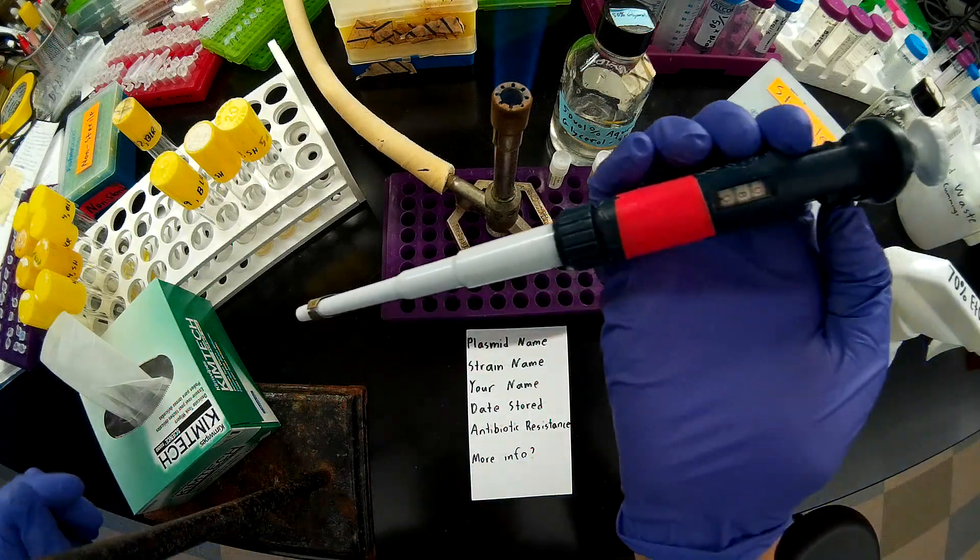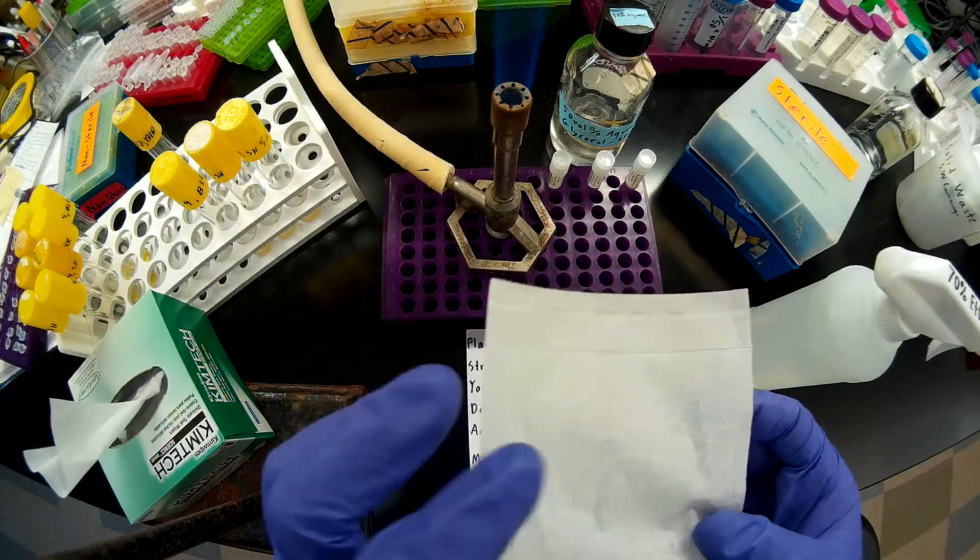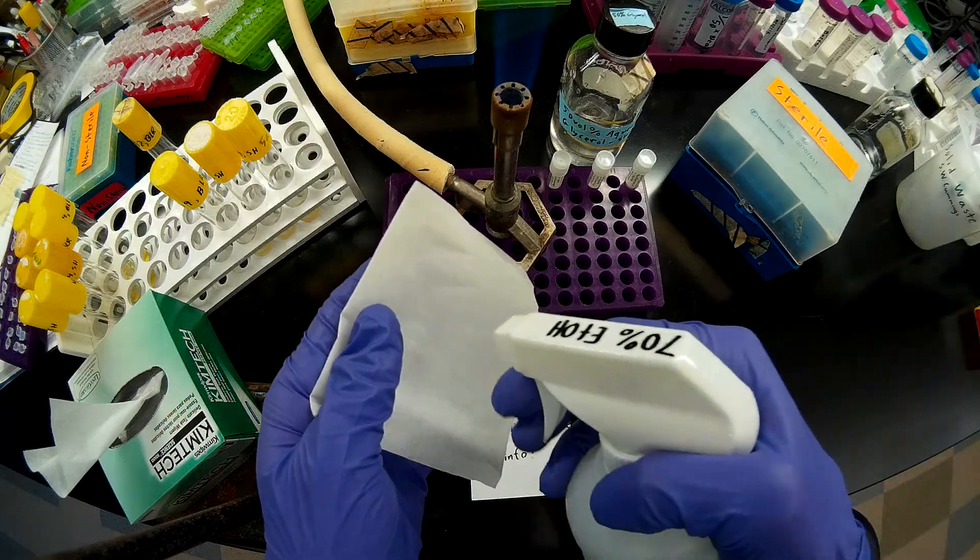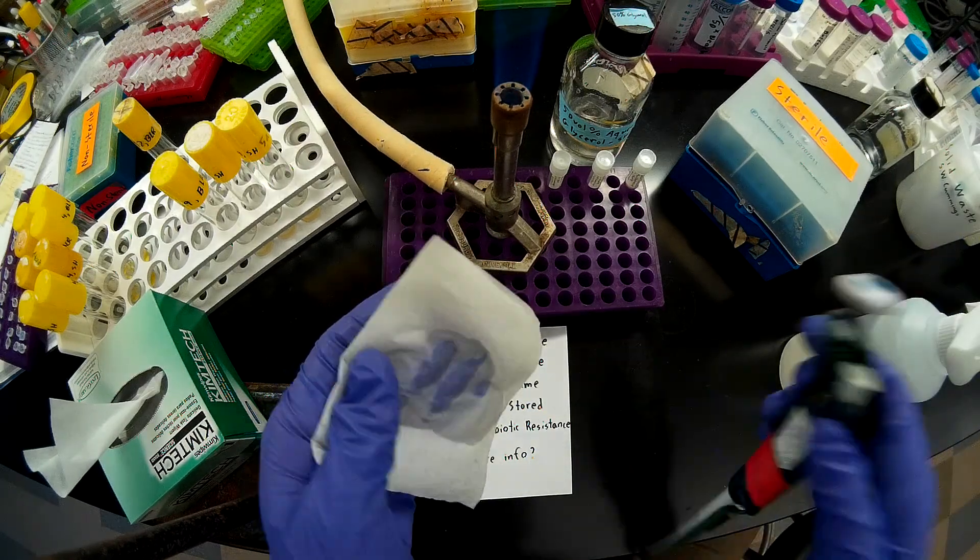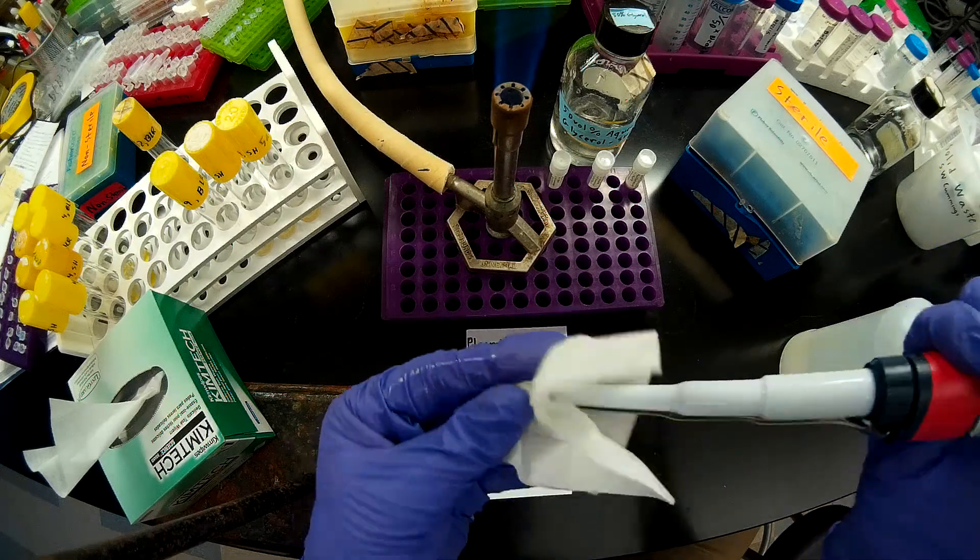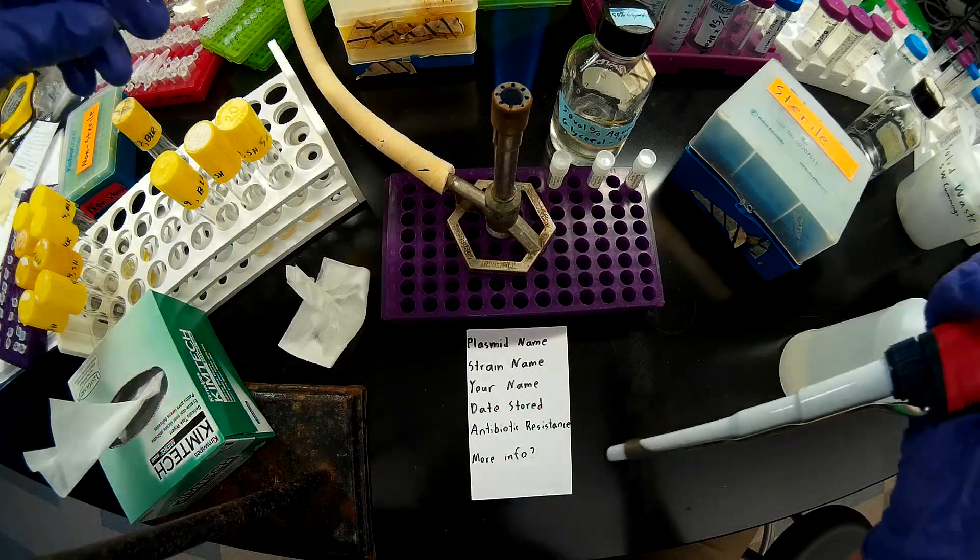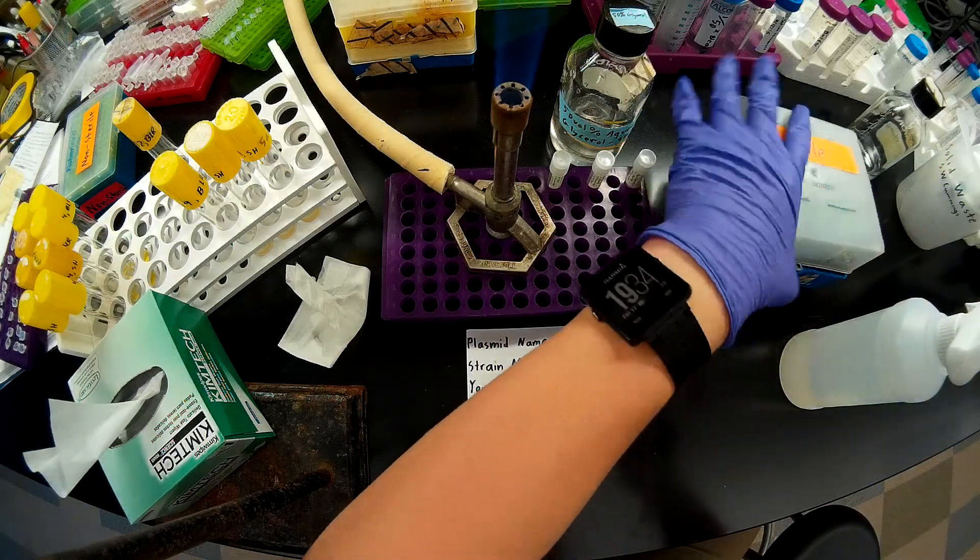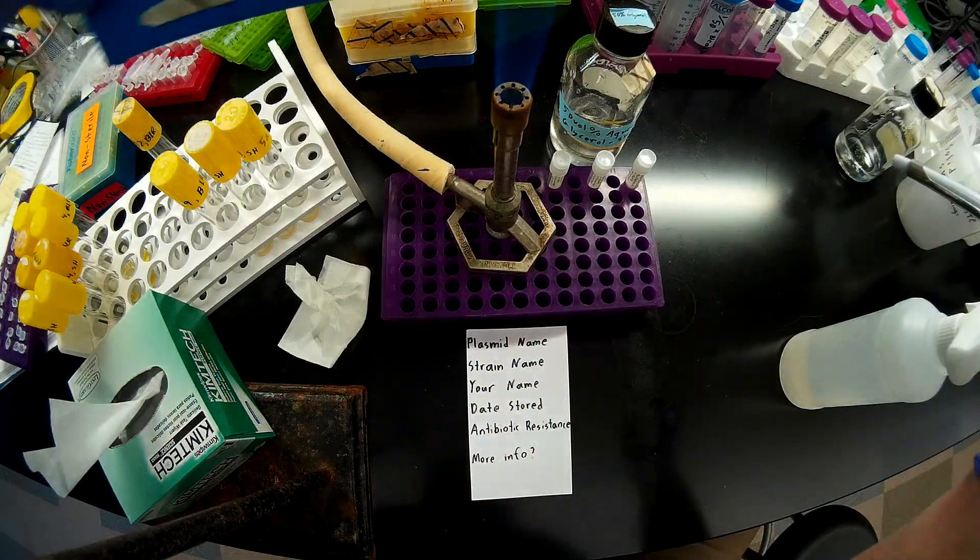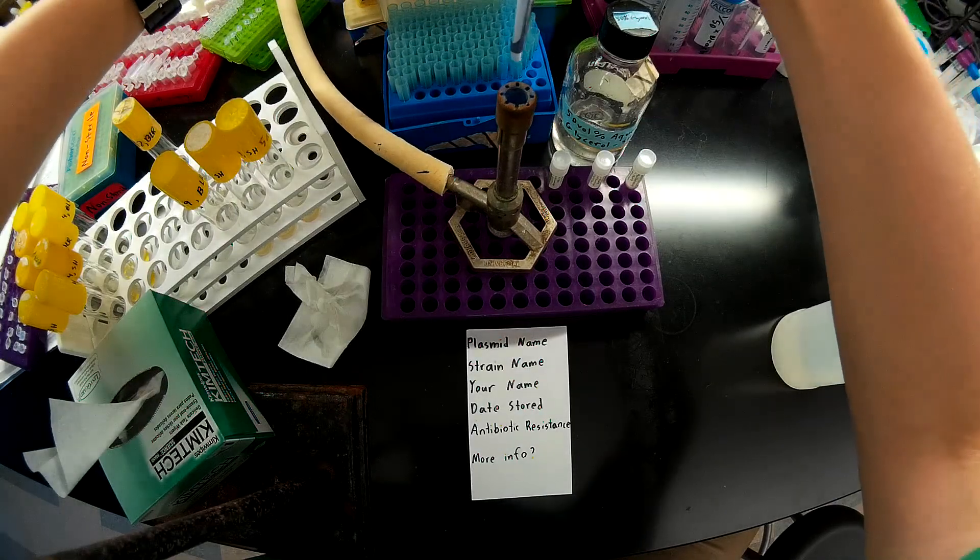So I'm setting that to 0.8 mils, and I'm going to clean it off, clean the barrel off with 70% ethanol before I stick this down into a sterile bottle here. I'm going to move these pipette tips over here.